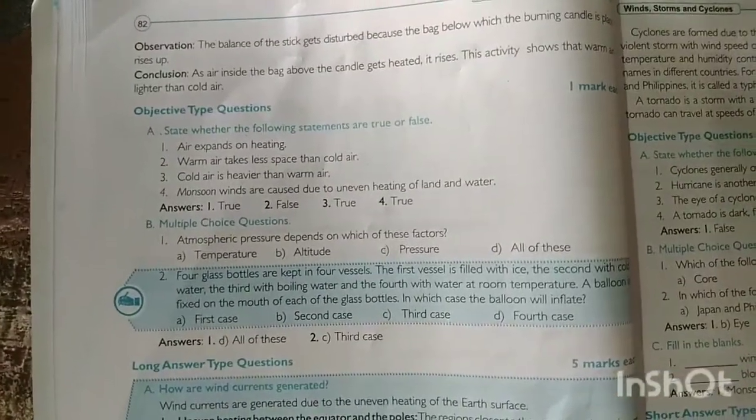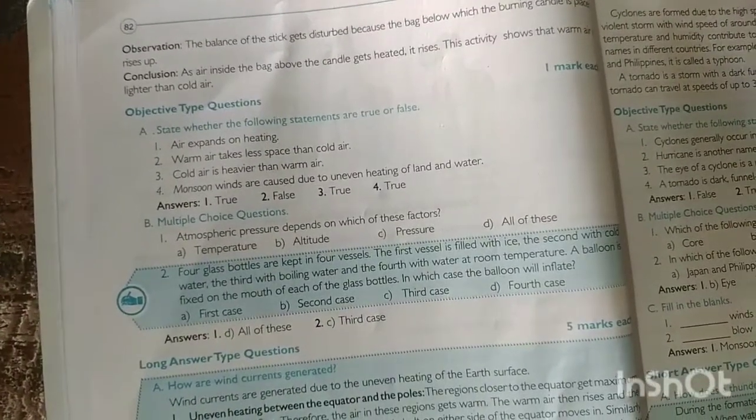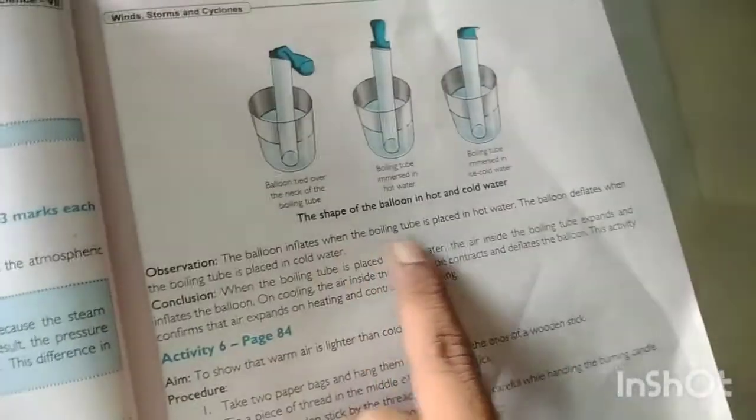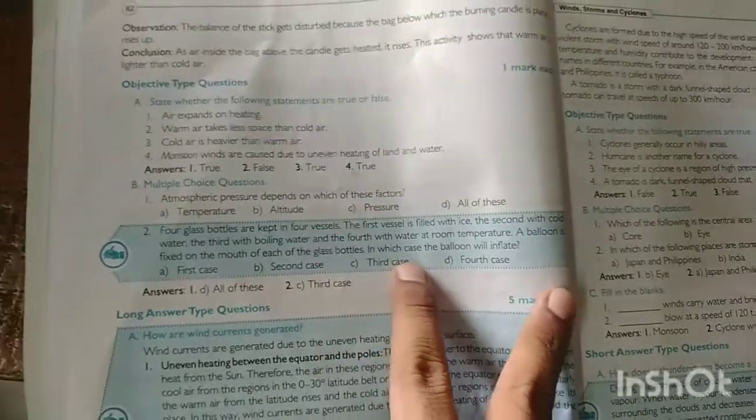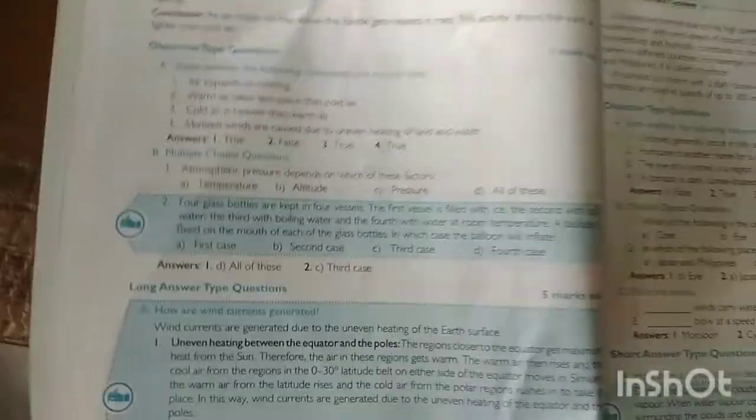Four glass bottles are kept in four vessels. First is filled with ice, second with cold water, third with boiling water, and fourth with room temperature water. A balloon is fixed on the mouth of each glass bottle. In which case will the balloon inflate? You can see that when you have boiling water, the third case, the balloon will inflate.